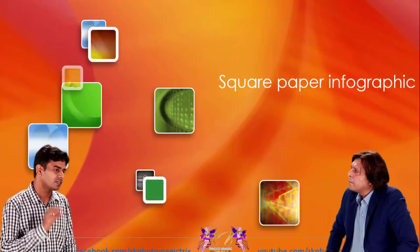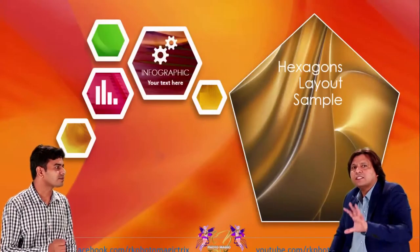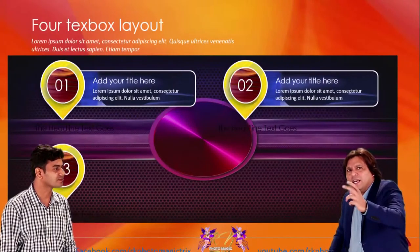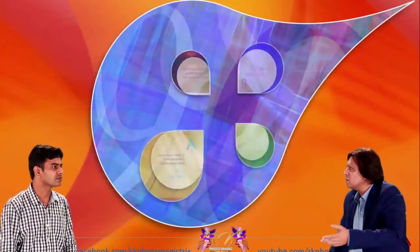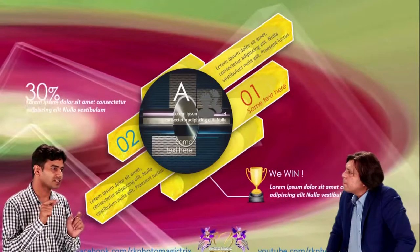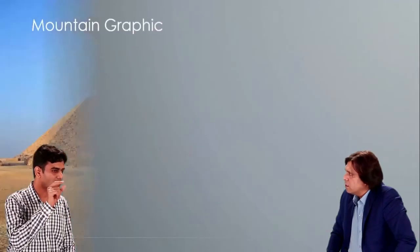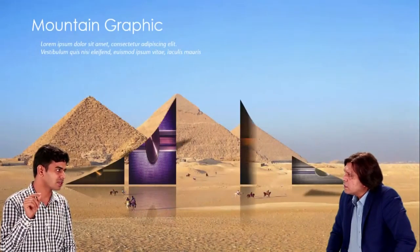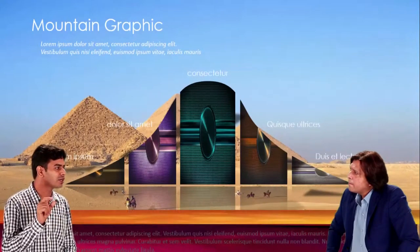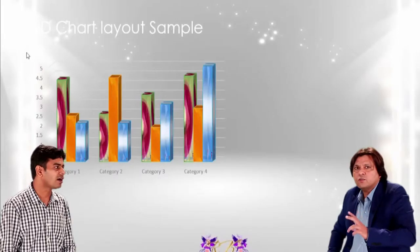When you use these words, it should be simple words and it should be easily understandable to the people. What it means to say is if you make a slide, you don't have a lot of bullets in it. When you make a slide, I would suggest the 6x7 rule. In one slide, you don't have more than 6 lines, and in each line, no more than 7 words. Just try to use bullet points. Avoid complete sentences.